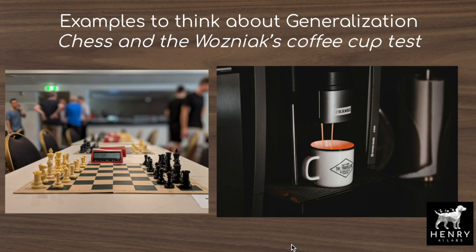Two examples are useful for thinking about generalization. The first is game-playing AIs like chess. A chess algorithm might be really good against strong players, but what often happens — as with the Dota 2 algorithm — is that once researchers open-source the model, people find adversarial policies or ways of playing that corrupt the chess system or Dota 2 agent. Even though it plays against great players, it needs to generalize to all sorts of different players.